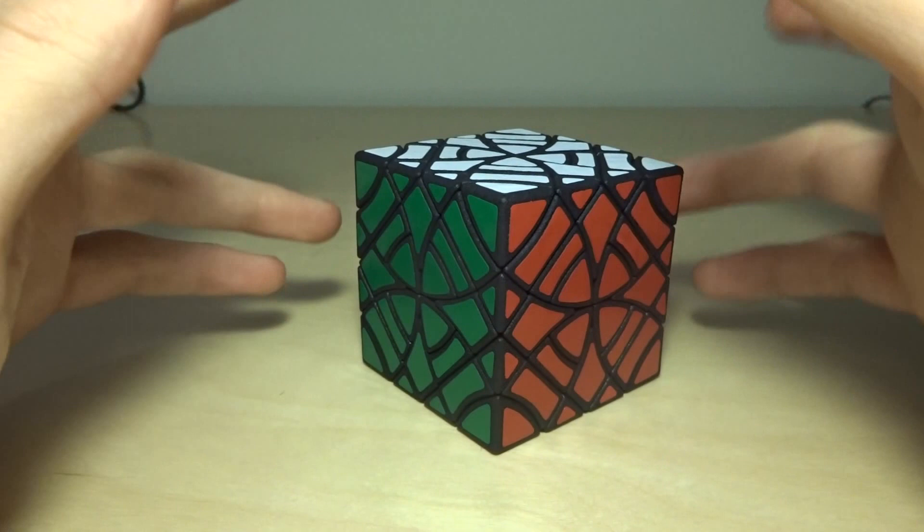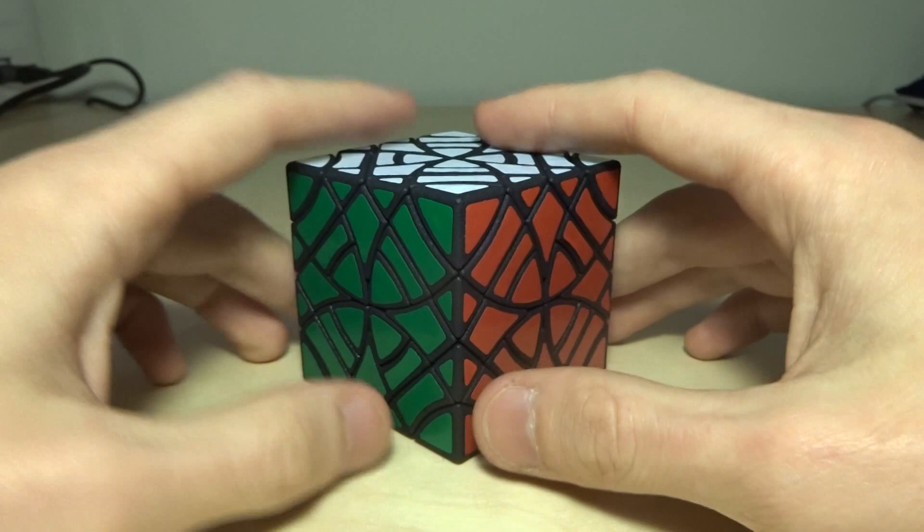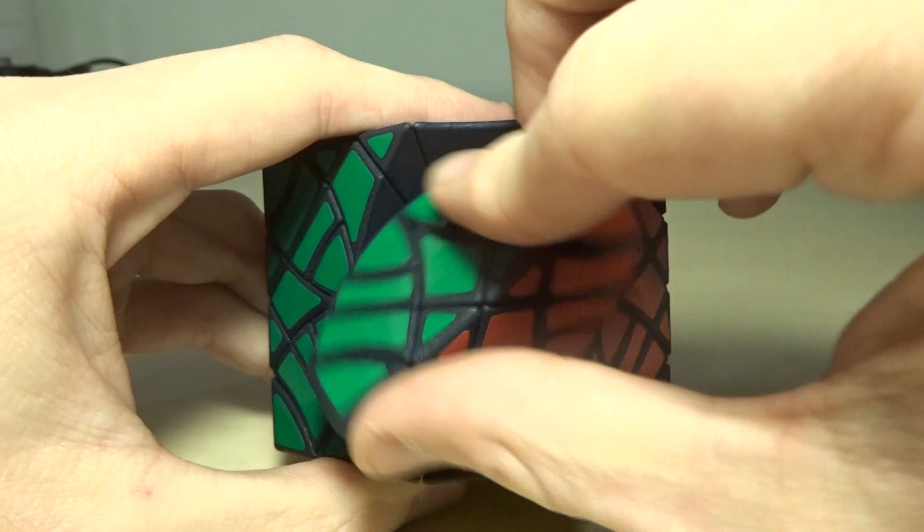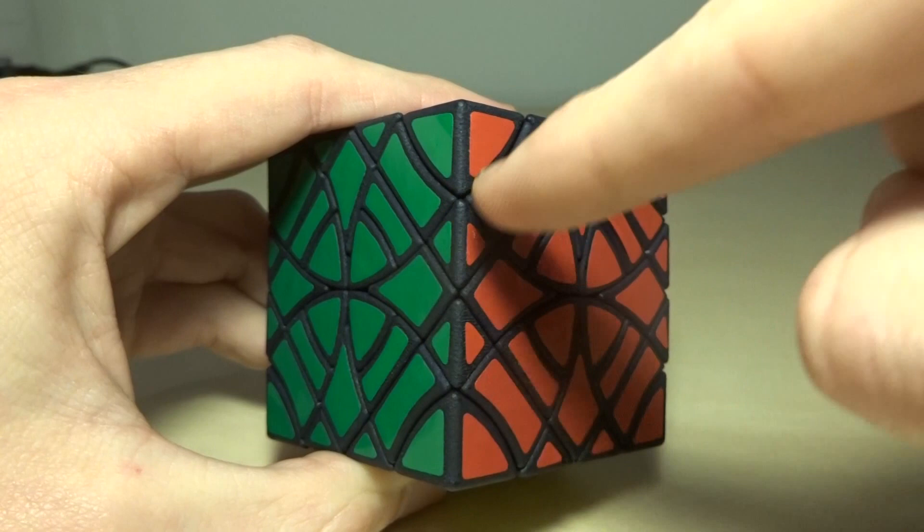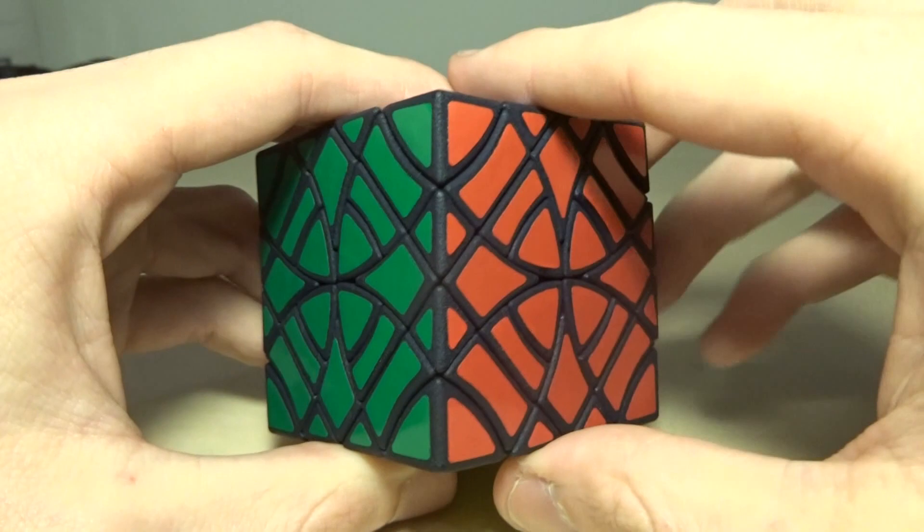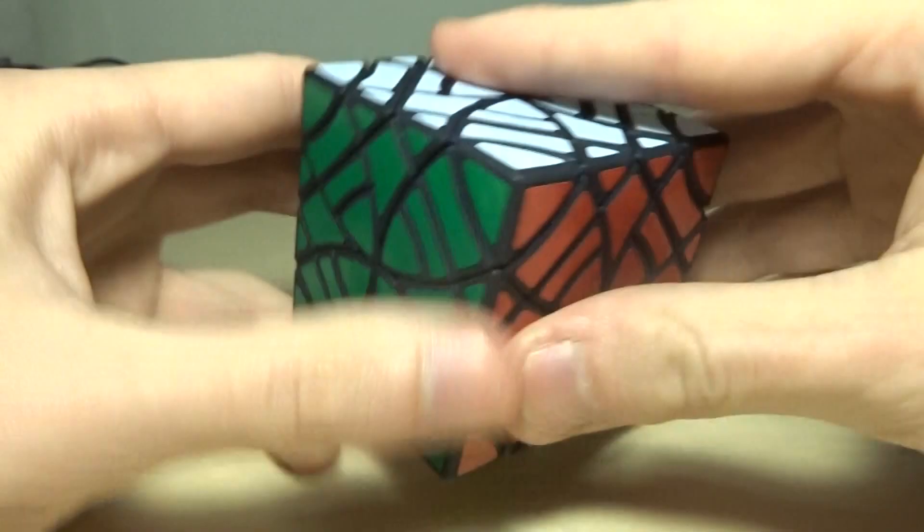Besides having the normal jumbling moves, because of how the two geometries interact, this puzzle also brings some interesting new jumbling moves. Normally, when you turn a Curvy Copter axis, you're turning it around these rhombuses over here. Or rhombi, however you say that.